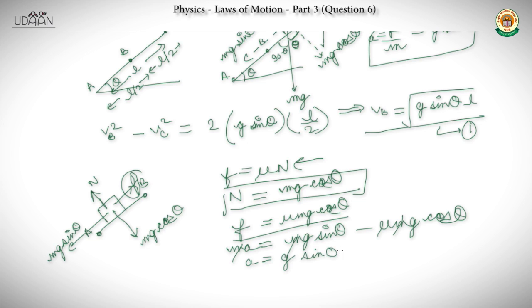Now we will apply the equation v² − u² = 2as. So we have Va² − Vb² = 2 × (g·sin θ − μ·g·cos θ) × (L/2).